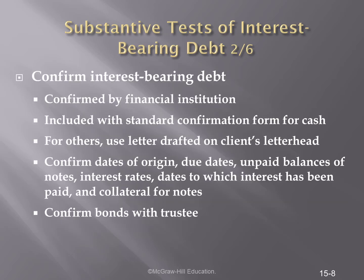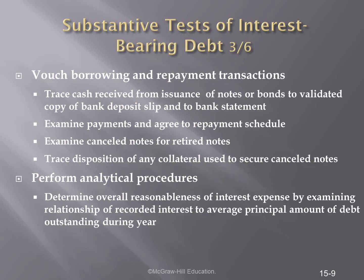As with other confirmations that we send to banks, we're going to confirm the existence and accuracy of these bonds. We're confirming the date of origin, due dates, unpaid balances, interest rates, dates on which the interest needs to be paid, and collateral. We're going to be confirming our bonds with the trustee that is holding these bonds. We should vouch for borrowing and repayment transactions, trace cash received from the issuance of the bond, examine the payment and the payment schedule, and examine canceled notes for retired notes.